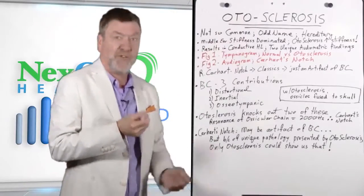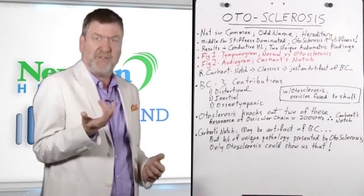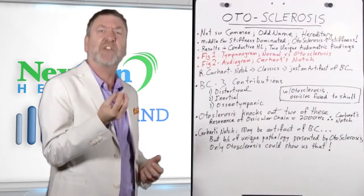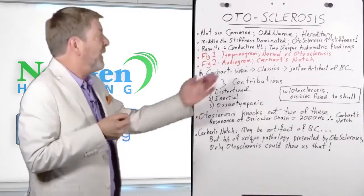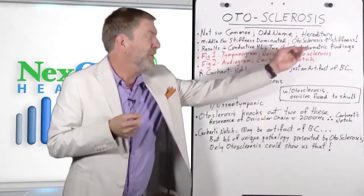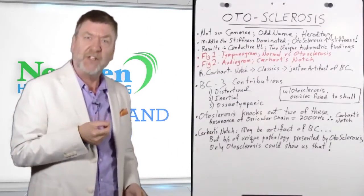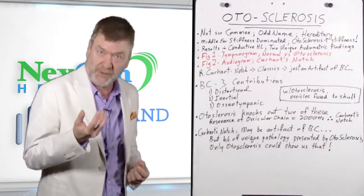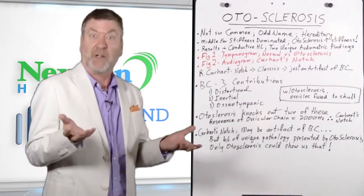But otosclerosis, because of its unique pathology, it's not an infection, because of its unique increase of stiffness that it gives to the middle ear, has two rather unique audiometric findings. And this helps clinicians delineate it or differentially diagnose it from other middle ear pathologies.